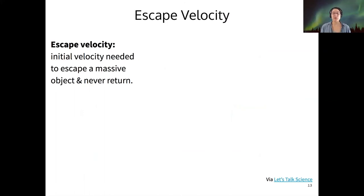And in order to understand this, we have to talk about the idea of escape velocity. So the escape velocity is just the initial velocity that you need to escape a massive object and never return. So if we want to, for example, send a space probe into deep space, far from the Earth, then we need to give it at least the escape velocity to escape the gravitational influence of the Earth.